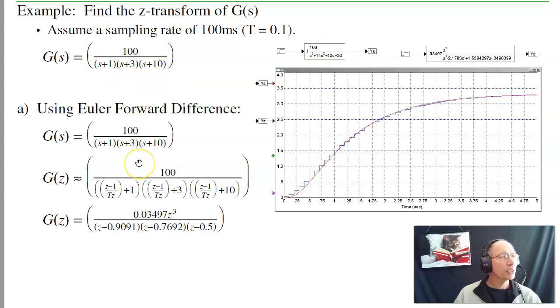If I use the Euler approximation, wherever I see s, replace it with its Z-equivalent. And what I wind up with, after a little bit of algebra, is a discrete time pole at 0.9, 0.76, and 0.5. And I also have three zeros at z equals 0.